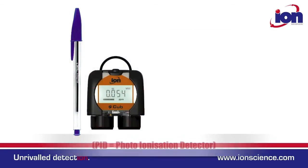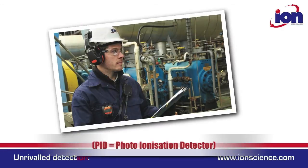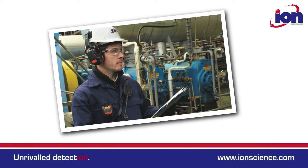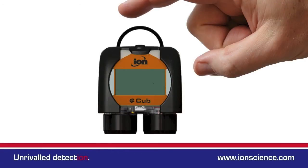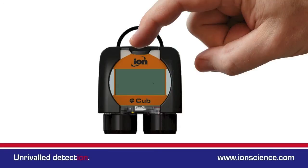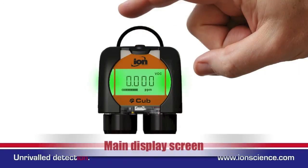The Cub is a very small and easy to use personal PID monitor. It has a very simple user interface which consists of just a single button and a bright LCD display. Switch on by pressing the button once. After a brief startup, the main screen is displayed.